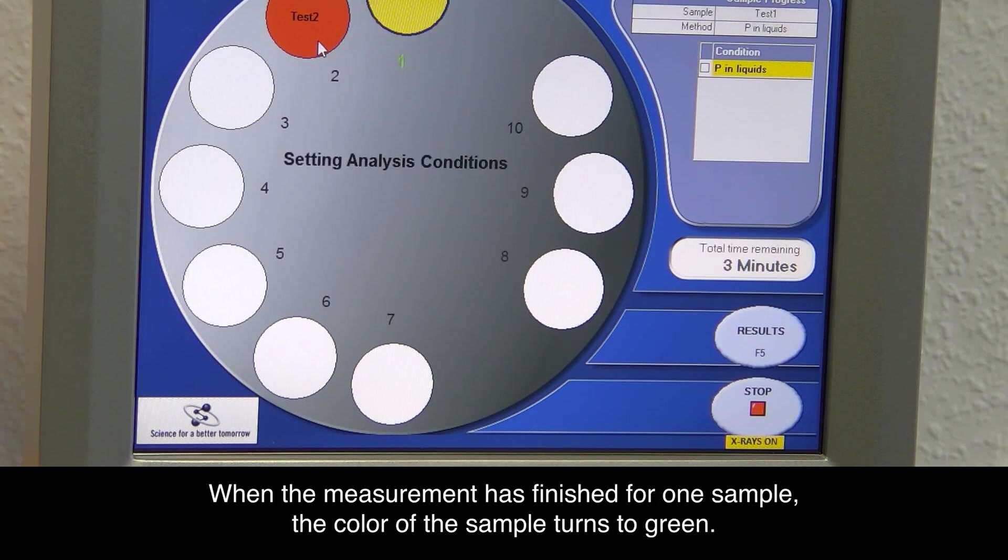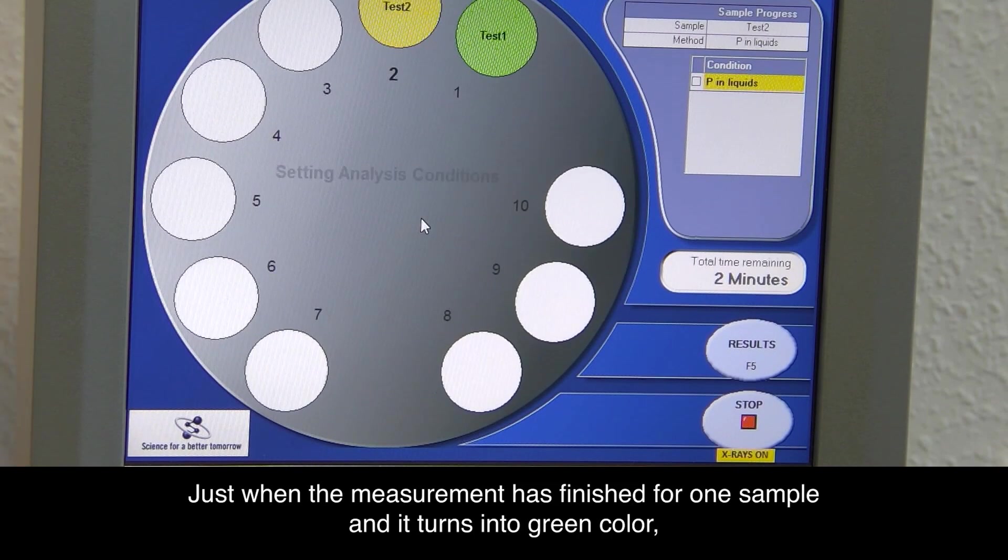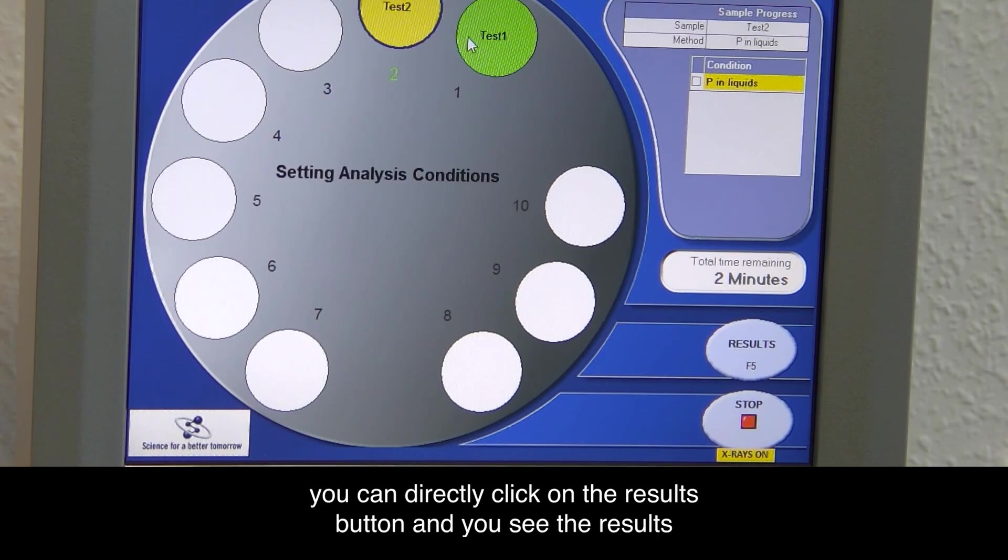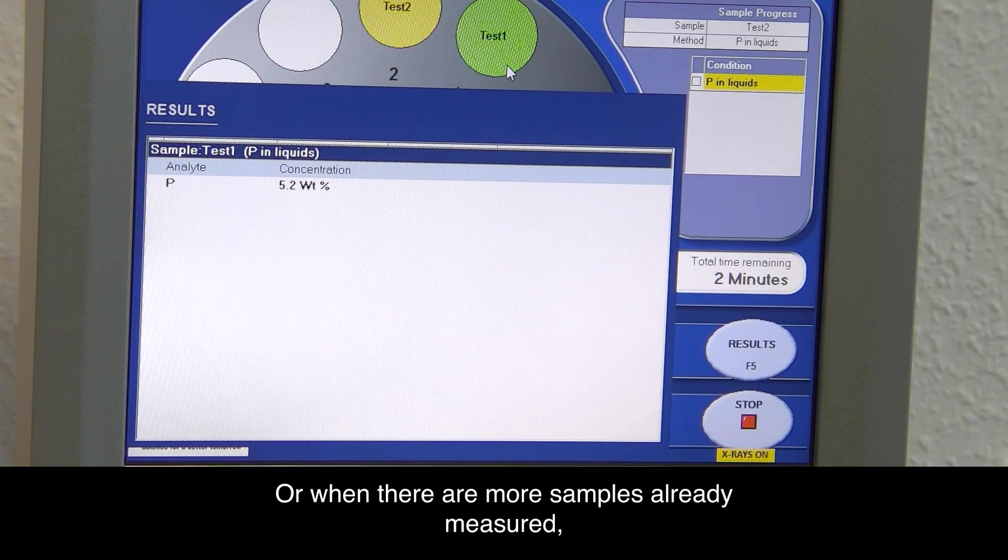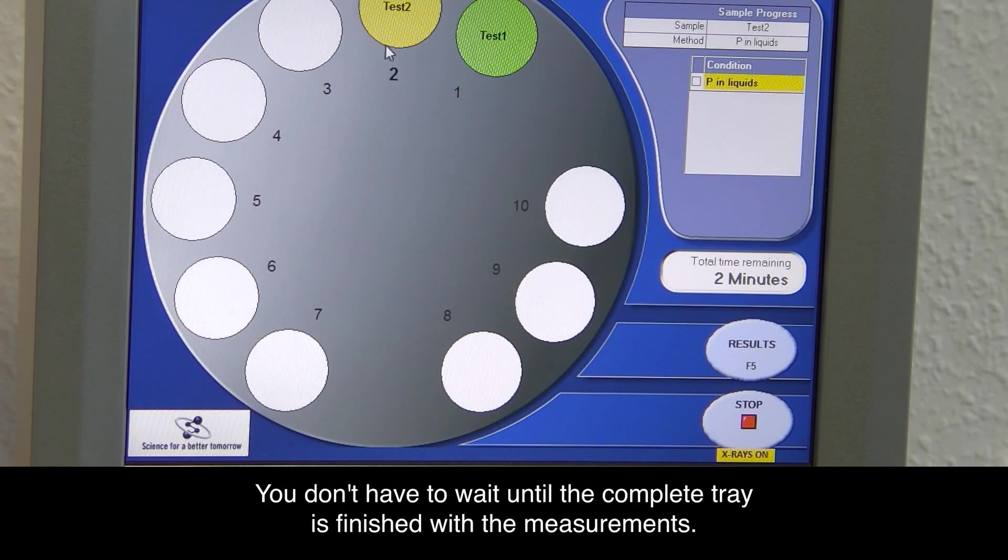When the measurement has been finished for one sample, the color of the sample turns to green. Just when the measurement has finished for one sample and it turns into green color, you can directly click on the results button and you see the results for this one green sample. Or when there are more samples already measured, you would also see all results for all green samples. You don't have to wait until the complete tray is finished with the measurements.